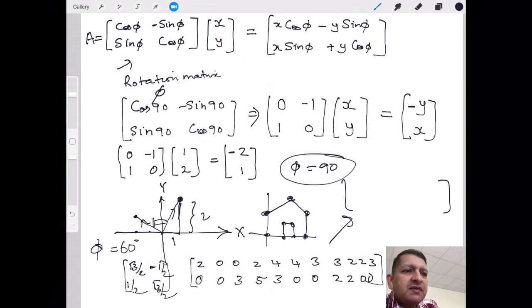Now if we were to plot all these points again on the graph, we are going to see that this house is now rotated by 60 degrees because we took φ as 60 degrees.